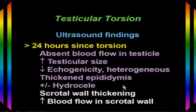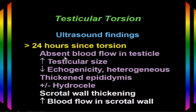After 24 hours, we have what's called missed torsion — the torsion has blocked blood flow to the testicle for more than a day. On ultrasound, we'll still see no flow inside the testicle, but we may now see thickening of the scrotal wall and increased blood flow in the scrotal wall. Changes in the testicle continue — it may be enlarged or edematous, with hypoechogenicity or heterogeneity. The epididymis will still be thickened, and a hydrocele is likely present.